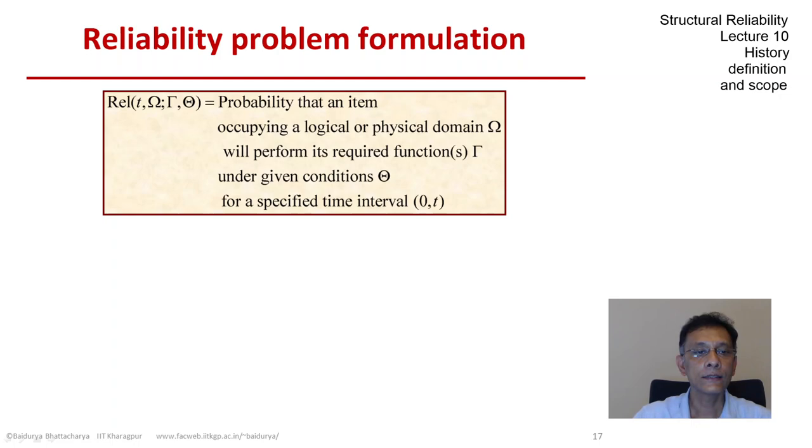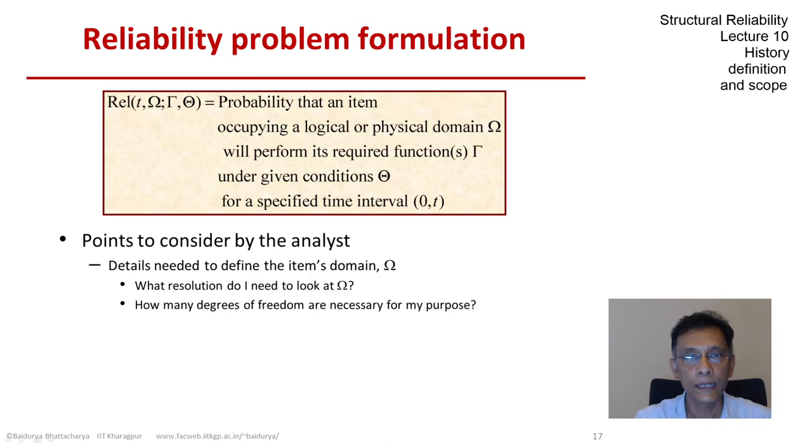So as an analyst, I need to consider several things and let us go through one by one. First is what is the level of detail I need to define the domain omega? What is the resolution? How many degrees of freedom do I need to look at?